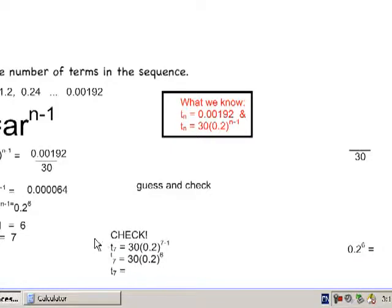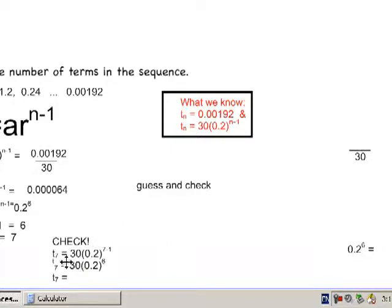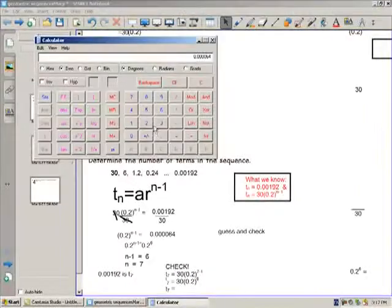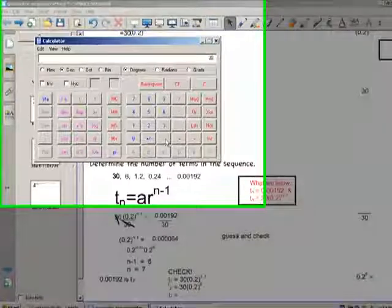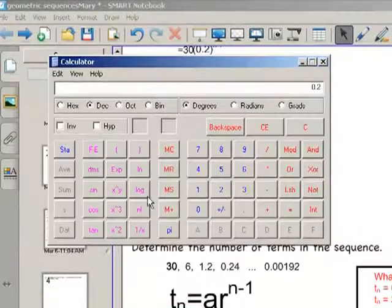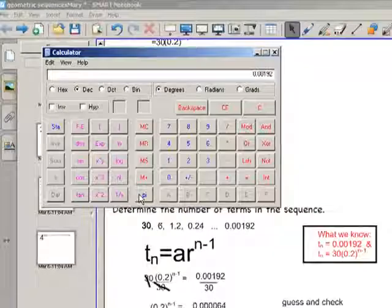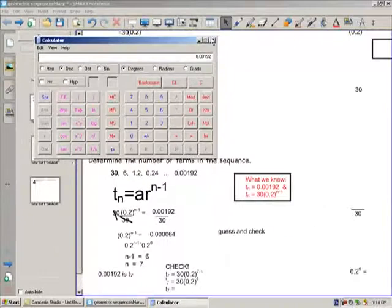This is the check for my final answer to make sure it was correct. T7 is 30 times 0.2 to the 7 minus 1, which is 30 times 0.2 to the 6. And let's get a calculator. Let's see if the calculator does BEDMAS. 30 times 0.2 to the 6 will give us 0.00192, the exact value we were looking for.